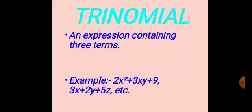Trinomial: 'Tri' comes from 3 — an expression containing three terms. For example, 2X² + 3XY + 9: this expression has three different terms, so it is called a trinomial. Another example is 3X + 2Y + 5Z — also called a trinomial.